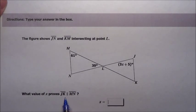What value of x, where's x, right there, proves that JK is parallel to MN, that this line and this line are parallel?